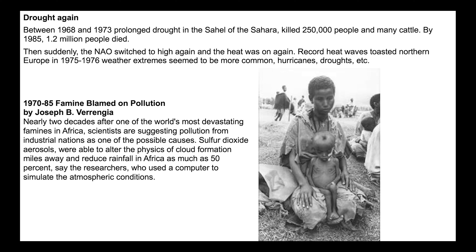Between 1968 and 1973, there was a prolonged drought in the Sahel — the semi-arid to arid region around the hyper-arid Sahara — resulting in the death of 250,000 people and an unknown number of cattle. By 1985, 1.2 million people had died in this region. Then, just as quickly as it started, the North Atlantic Oscillation switched back to a high positive phase and it was hot — record heat toasted Northern Europe in 1975 and 1976. Weather extremes seemed to become more common around the world: hurricanes, droughts, floods, and famines all seemed to increase.